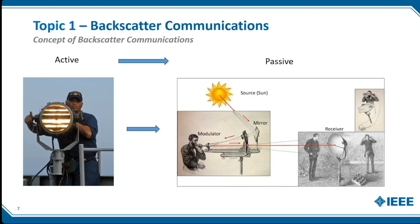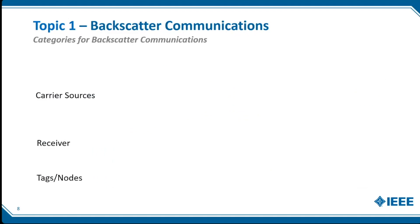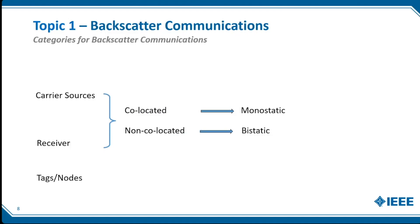Translating this to electromagnetic wave transmission: the active system generates an RF carrier locally, while the passive system utilizes available ambient electromagnetic waves. This is the basis of backscatter communication. Generally, a backscatter system includes three nodes: the carrier source, the receiver, and the tag node that conveys sensing information. Similar to radar, if the carrier source and receiver are co-located, we call it a monostatic system; otherwise, it is a bistatic system.